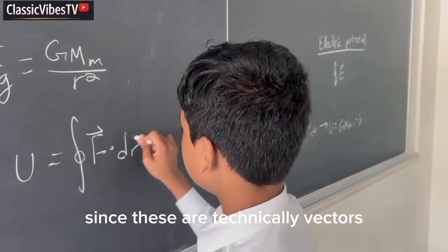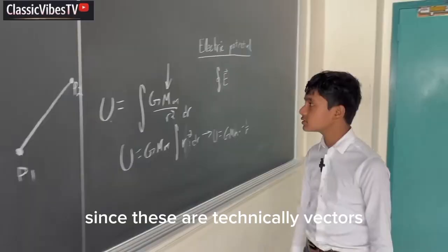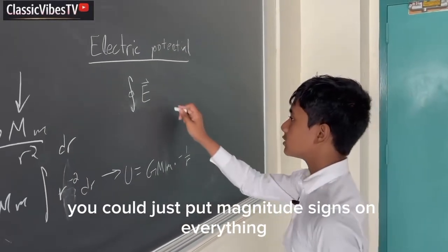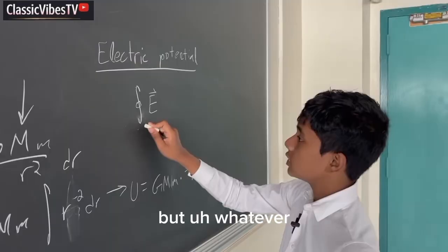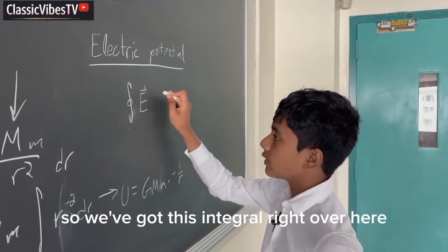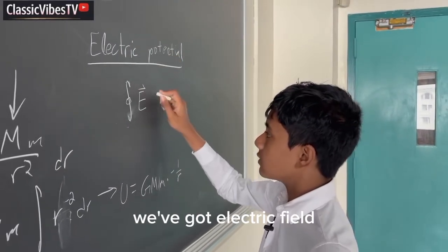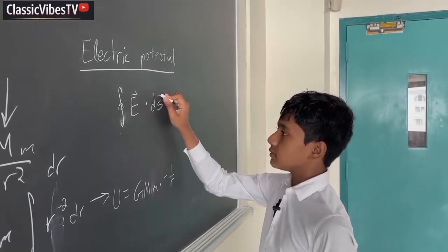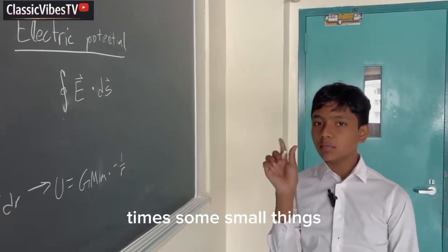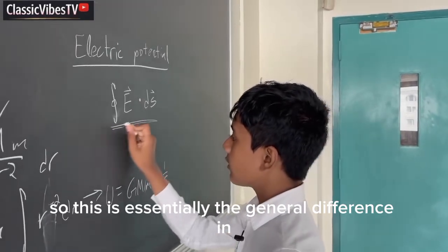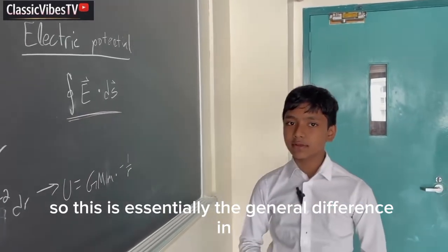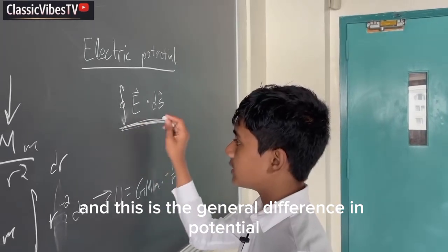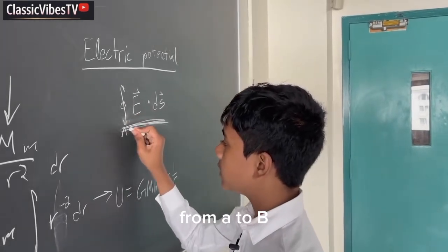Might as well go back, since these are technically vectors. So, I mean, if you really want to, you could just put magnitude signs on everything. But whatever. So we've got this integral right over here. We've got the electric field times some small change. So this is essentially the general difference in potential from A to B.